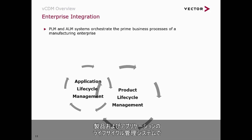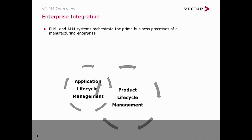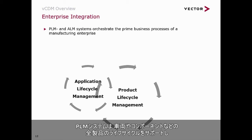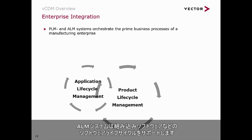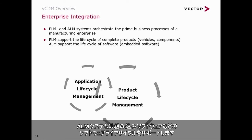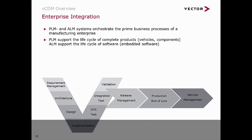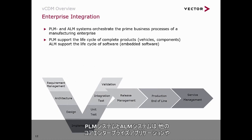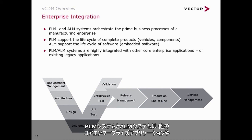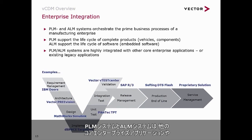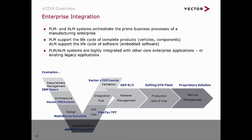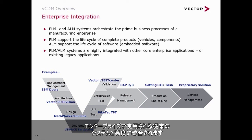Product lifecycle management and application lifecycle management systems orchestrate the prime business processes of a manufacturing enterprise. PLM systems support the lifecycle of complete products, typically vehicles or components, while ALM systems support the lifecycle of software — specifically embedded software. PLM and ALM systems are highly integrated with other core enterprise applications or with legacy systems used by an enterprise.